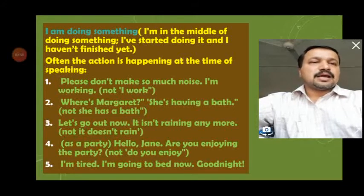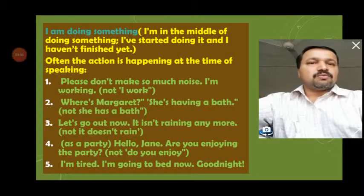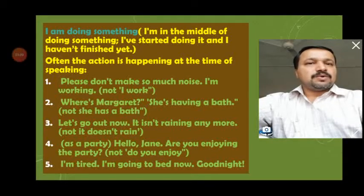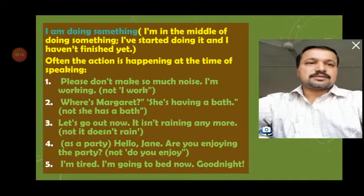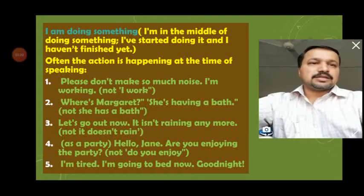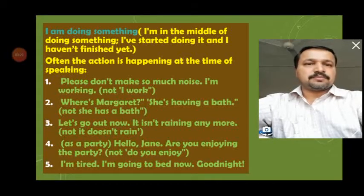Use 1 — things happening at the time of speaking. 'Please don't make so much noise, I am working' — at the moment I speak, I am working, so I'm asking you to be quiet. 'Where is Margaret?' 'She is having a bath' — at present she is taking a bath. 'Let's go out now, it's raining.' 'It isn't raining anymore' — now it is not raining.